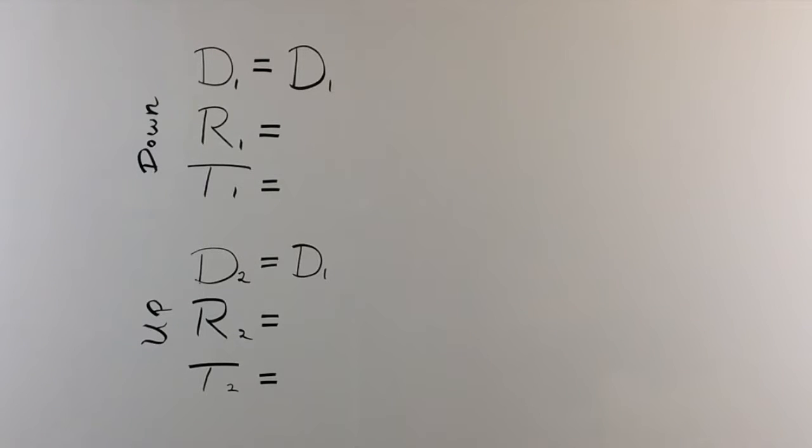And they gave us the speeds. R1 equals 12. And R2 equals 4. And that kind of makes sense. Going downstream you are going to go a lot faster than when you paddle back upstream. And for T2 we are going to say 1, that is 1 hour minus T1. And for T1 we are just going to put T1.